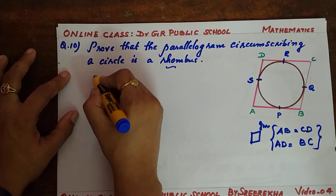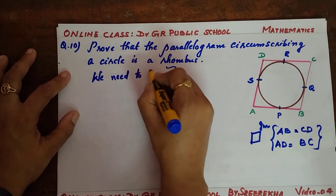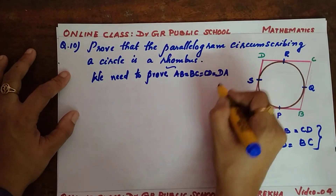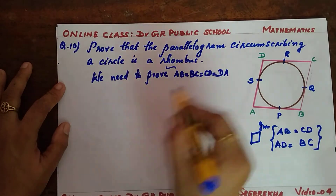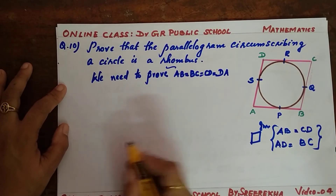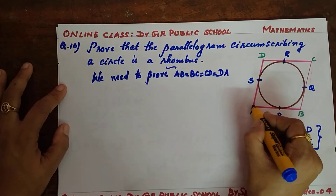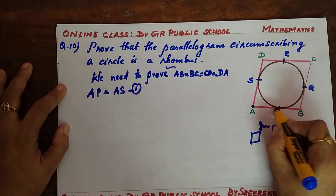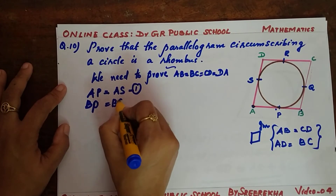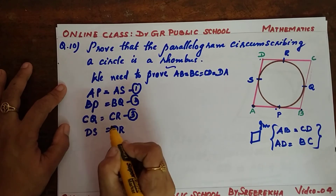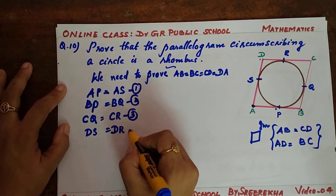Just like the last question, taking A as an external point, tangents from A give AP equals AS — equation 1. From B: BP equals BQ — equation 2. From C: CQ equals CR — equation 3. From D: DR equals DS — equation 4.